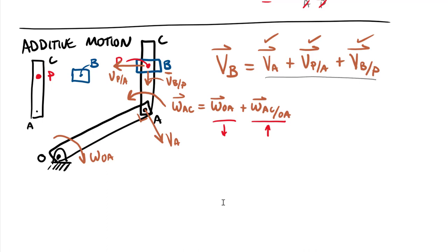All vectors can be drawn before computing the problem. The unique thing about additive motion is that we can't find the direction of V_B until we've computed everything else. Spatially, V_B absolute is the vector sum of V_A, plus V_{P/A} (horizontal), plus V_{B/P}. We can tell V_B must be directed downward, but whether it goes slightly left or right depends on the horizontal components of V_A versus V_{P/A} — we must compute first.